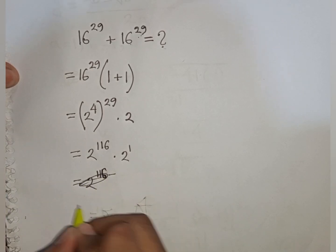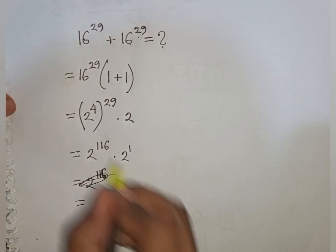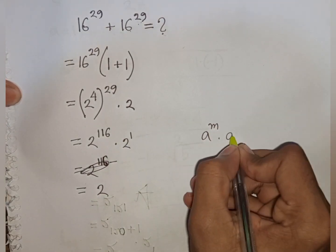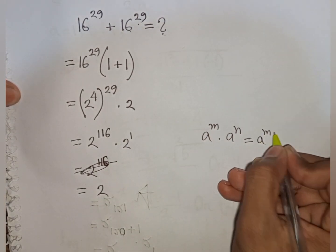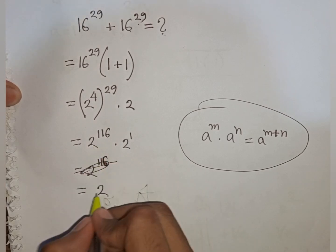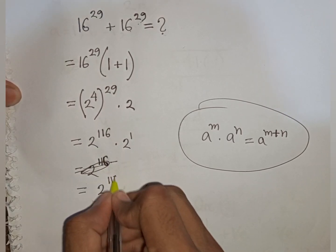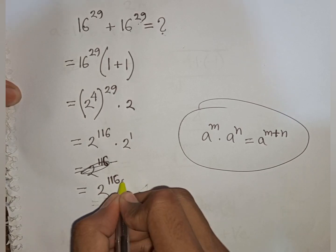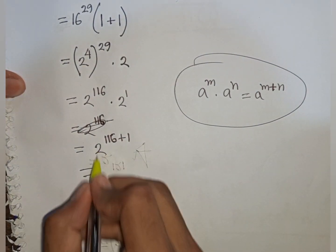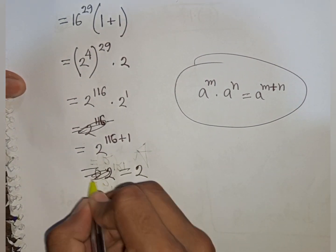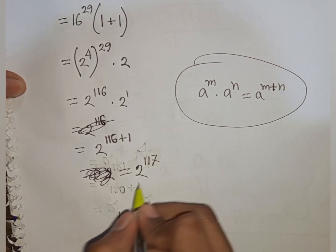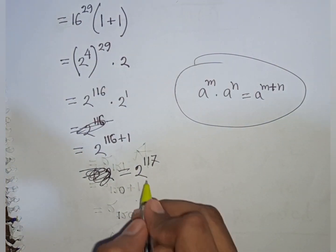Using the rule a^m · a^n = a^(m+n), we combine 2^116 · 2^1 = 2^(116+1) = 2^117. So the final answer is 2^117.